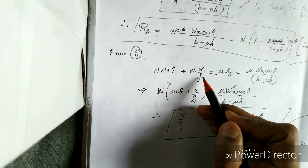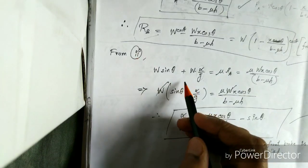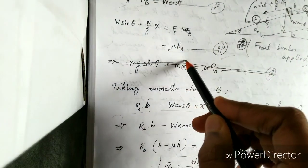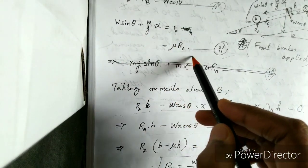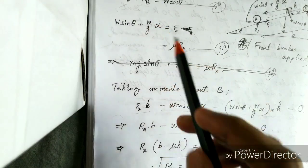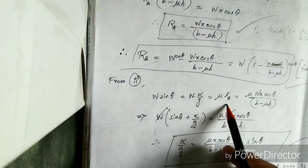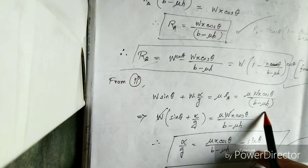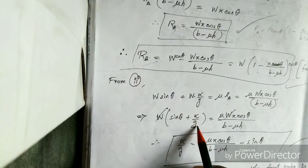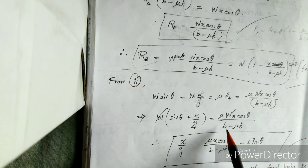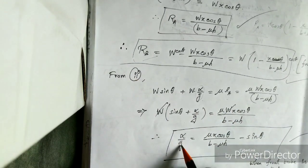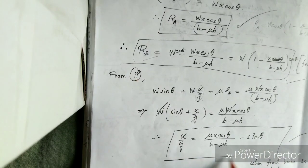Alpha is not an acceleration here but a retardation, and g is gravity. From equation 2, W sin theta plus W/G into alpha equals mu into RA. We now have RA, so substituting its value — W x cos theta divided by (B minus mu H) — and taking W common from both terms, we get sin theta plus alpha/g equals mu into x cos theta divided by (B minus mu H). Cancelling W from both sides and rearranging, we get alpha/g.